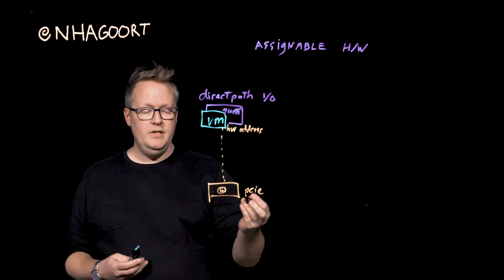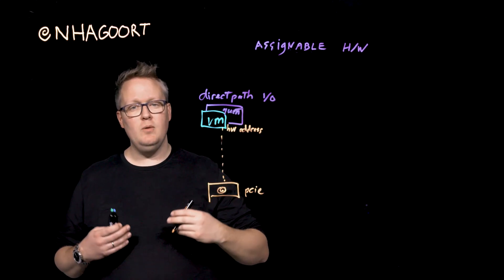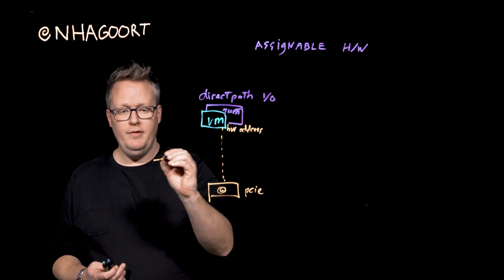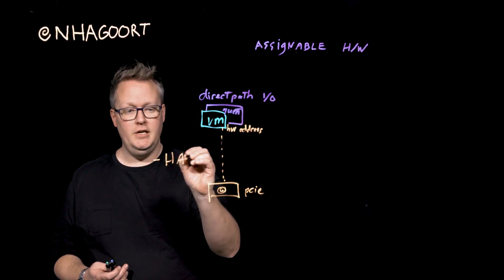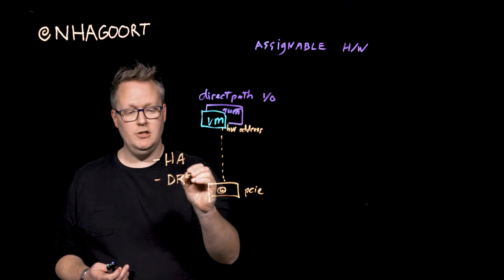Now, while this brings bare metal performance, because you have a one-to-one relationship, it also came with a lot of constraints. So we don't have any option for vSphere HA to kick in, and we also do not have the DRS logic in place.